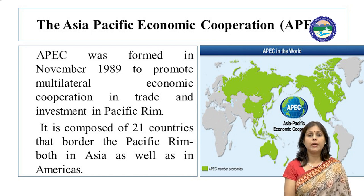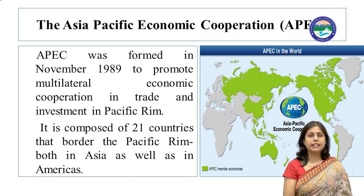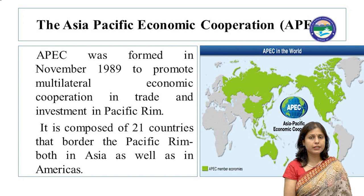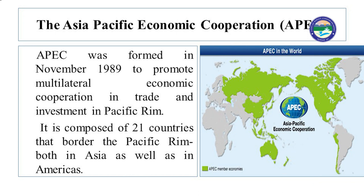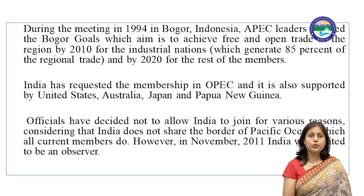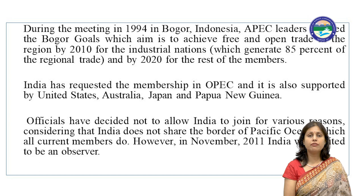The last economic trading bloc is APEC — the Asia-Pacific Economic Cooperation. APEC was formed in November 1989 to promote multilateral economic cooperation in trade and investment in the Pacific Rim. It is composed of 21 countries that border the Pacific Rim, both in Asia as well as in the Americas. During the 1994 meeting in Bogor, Indonesia, APEC leaders adopted the Bogor Goals, which aimed to achieve free and open trade in the region by 2010 for industrial nations.